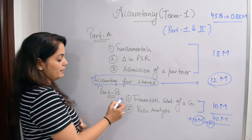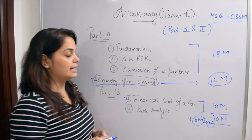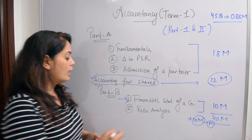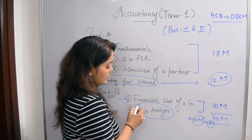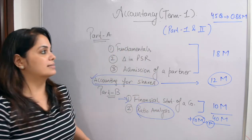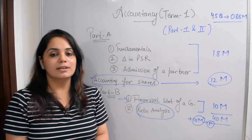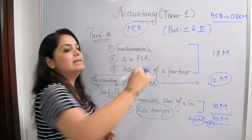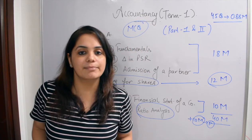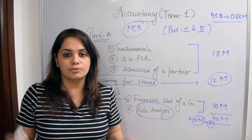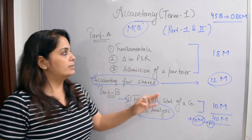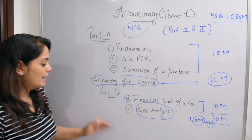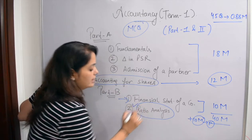Then in Part B, you have Chapter 1: Financial Statements of a Company, which covers all headings. Then there is Ratio Analysis. The most important thing about Term 1 is that everything is MCQ based — Multiple Choice Questions — like KBC, with 4 options. That is why we have MCQs in Term 1. We will start with Ratio Analysis.